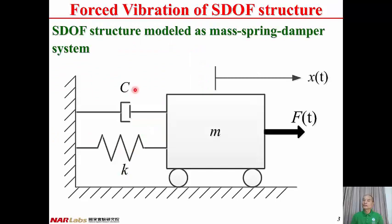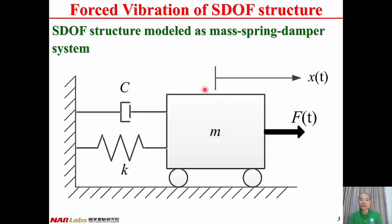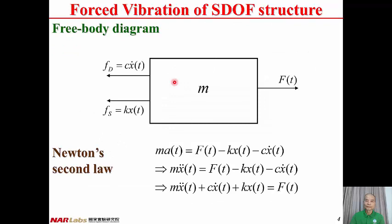A single degree of freedom structure can be modeled as a mass-spring-damper system. M is the mass of the structure. C is the damping coefficient of the structure. K is the stiffness of the structure. Ft is the external force, and Xt is the displacement variable of the structure.